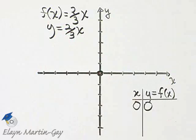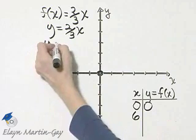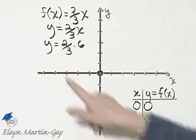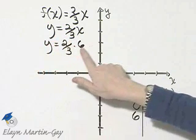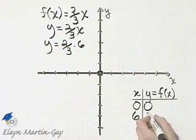Let's find a few more ordered pair solutions then. Let's suppose I let x be maybe six, then y is two-thirds times six, and what is two-thirds times six? Three divides into six two times, and two times two is four.